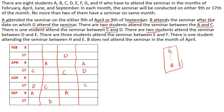The next clue: two students attend the seminar between D and E. So between D and E there is a gap of two persons. If D is here, one-two, E can be placed here. We work through the various possibilities for D and E across the different arrangement cases.